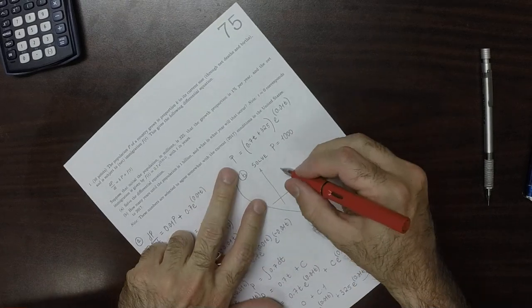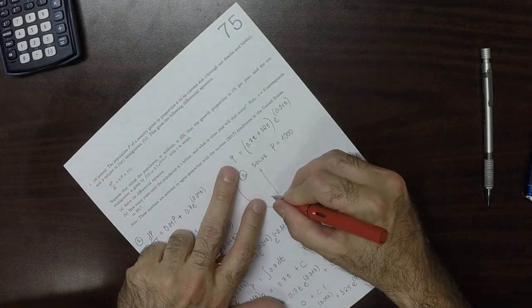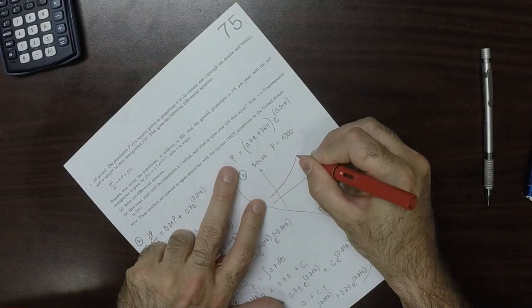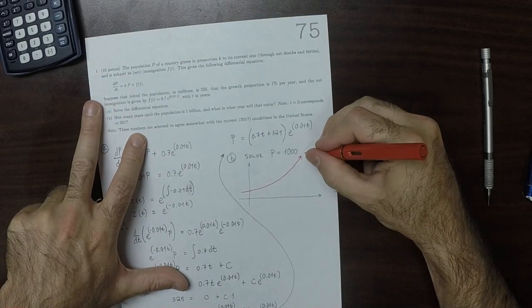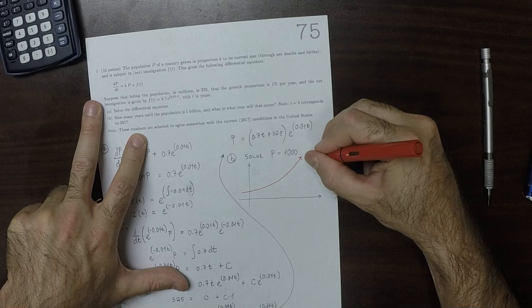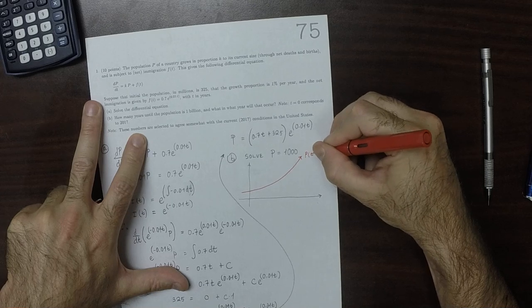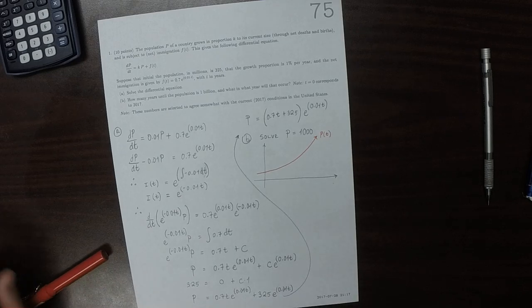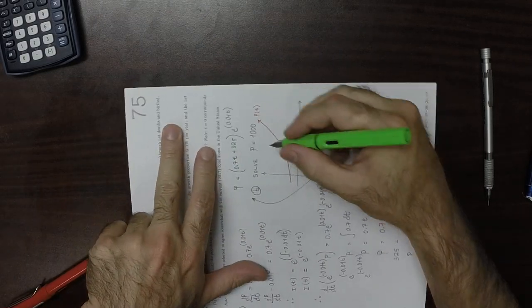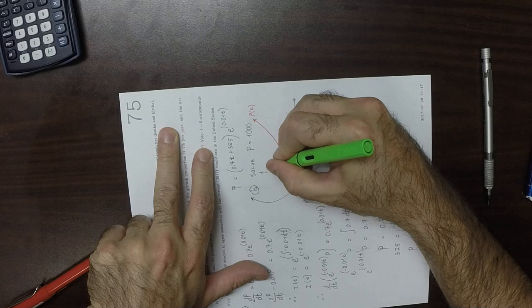is just to plot p. So p is going to end up looking something like this. So this is p of t. And then we want to know when the population reaches 1000.